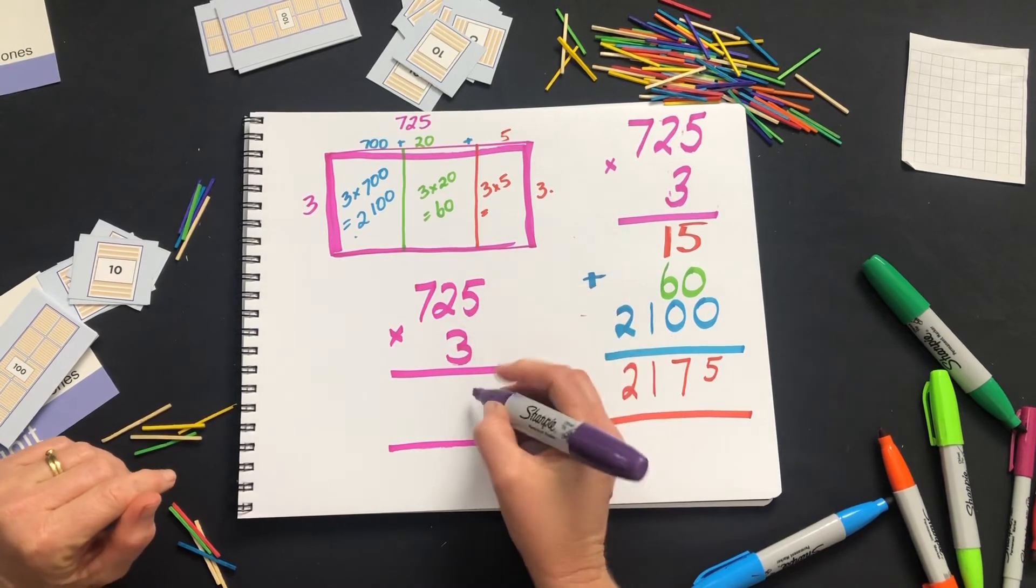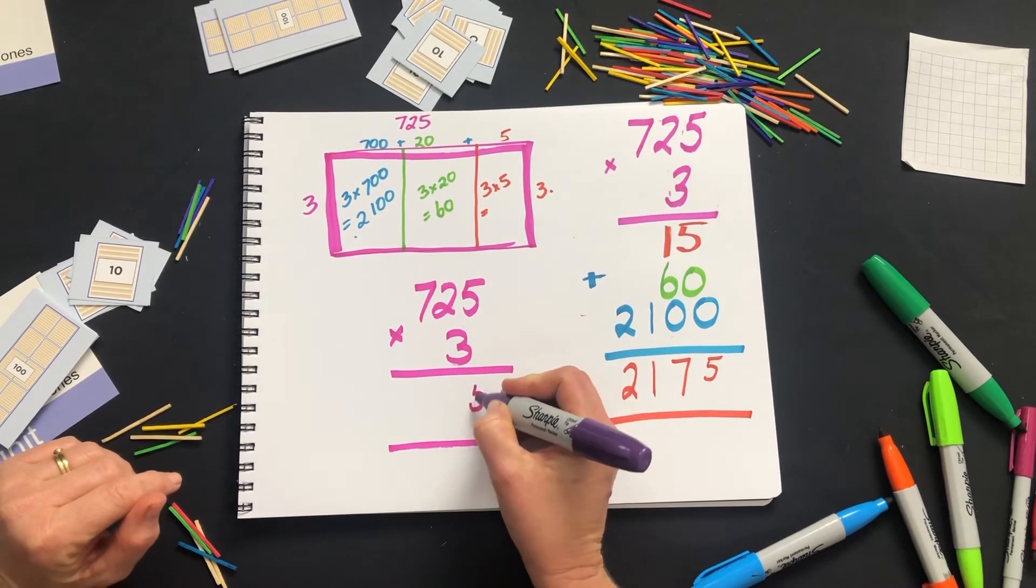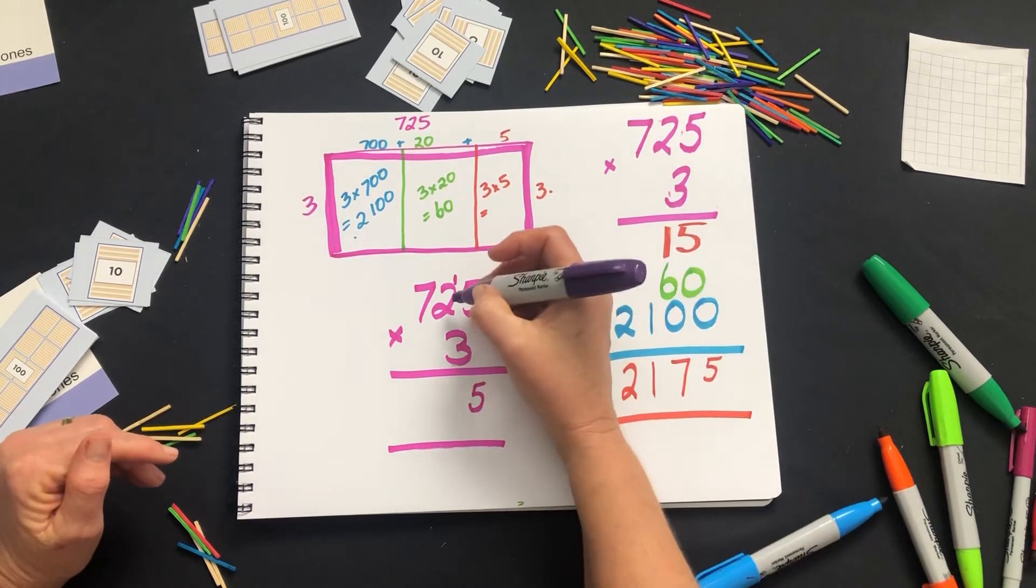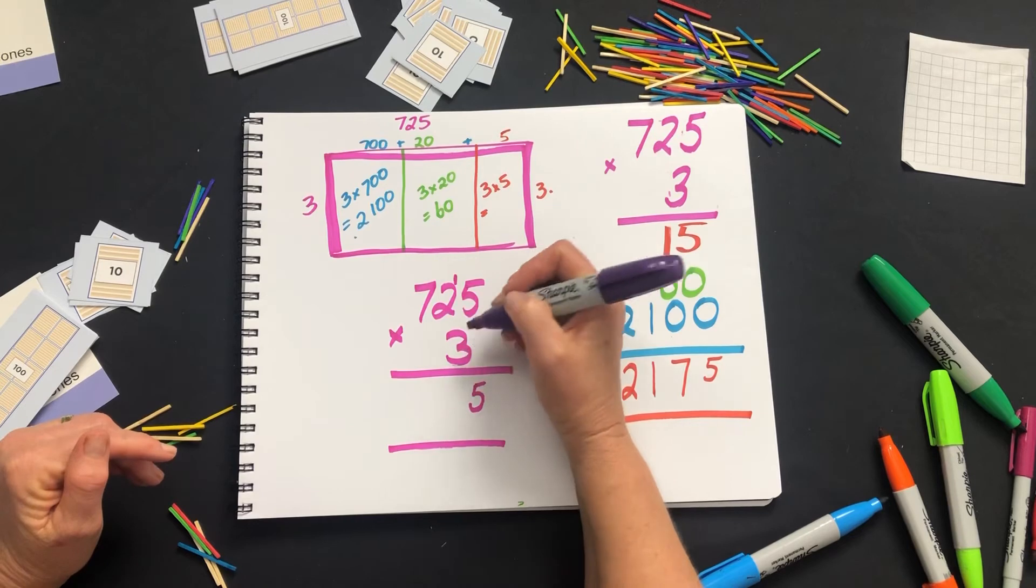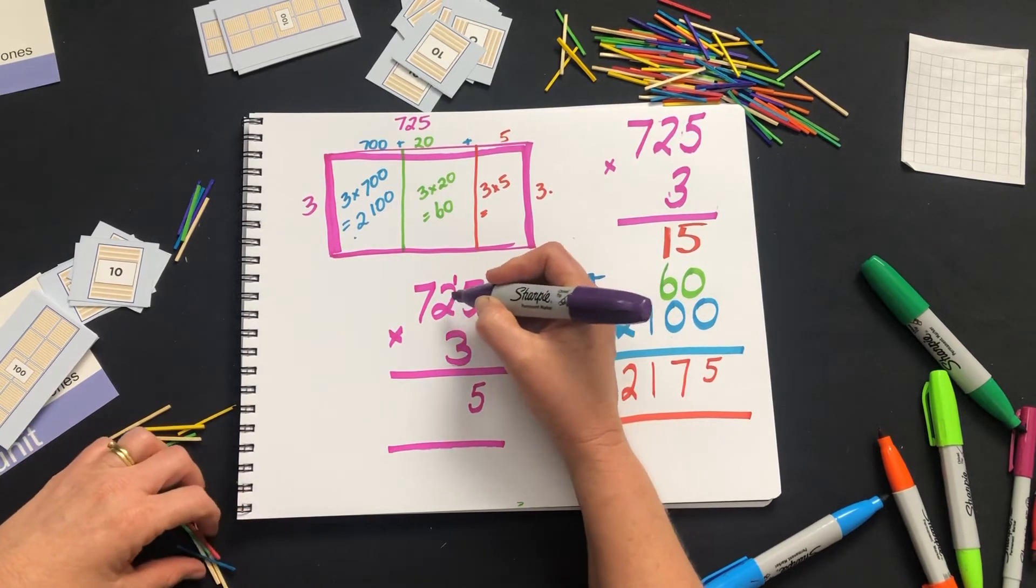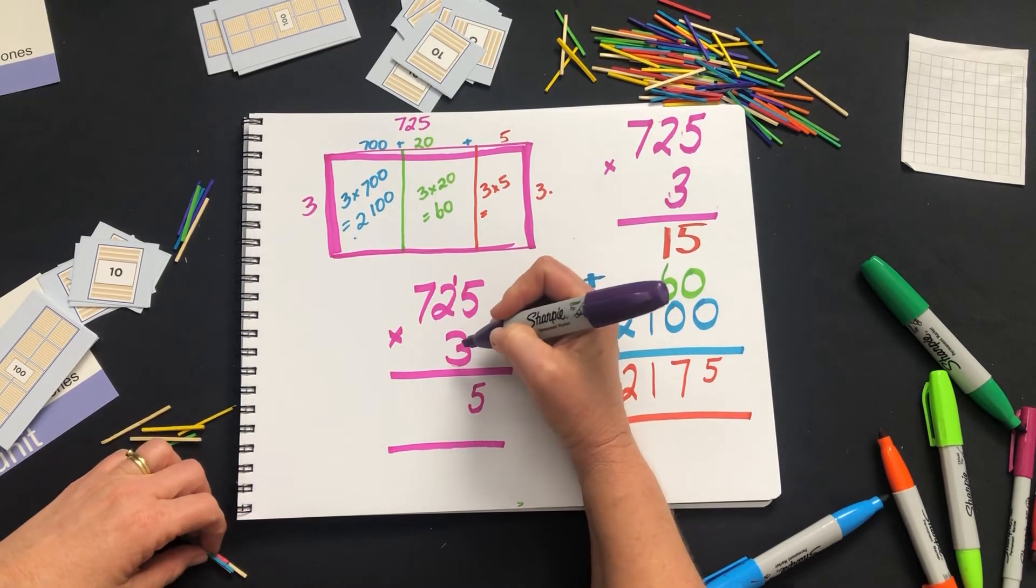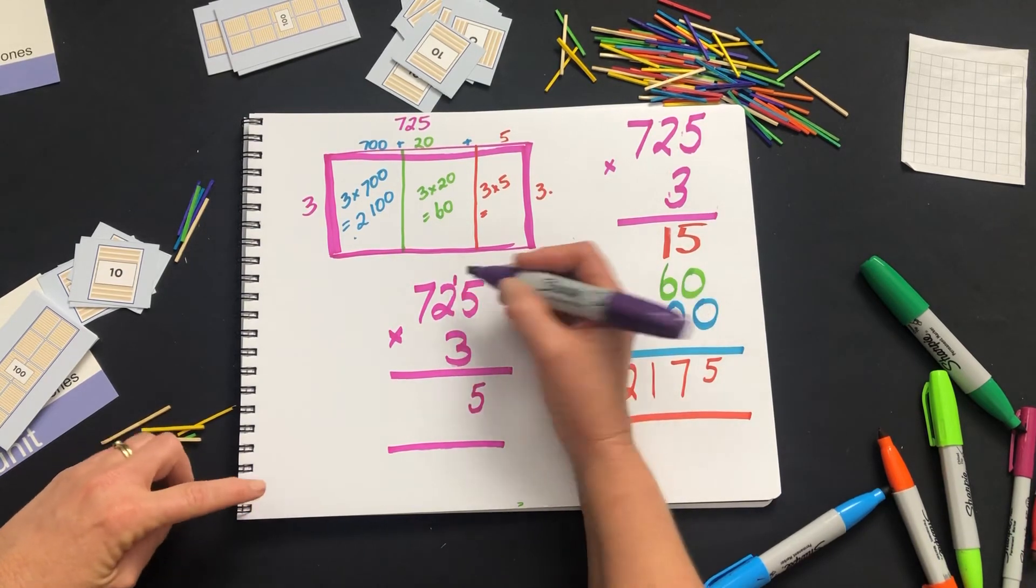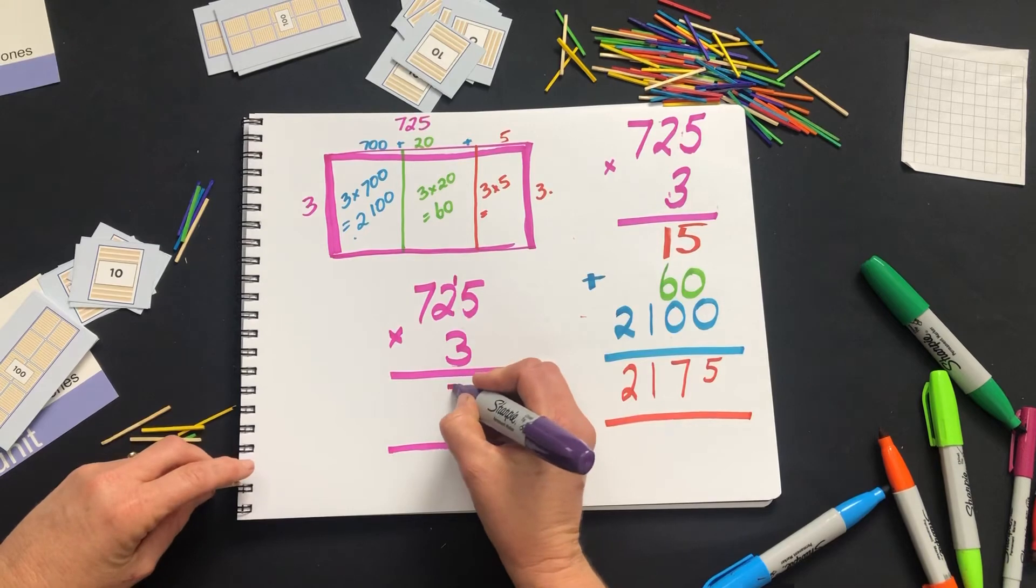So often we'll say 3 times 5 is 15. Put down the 5 and carry the 1. In fact, we're carrying 1 ten. 3 times 2—it's not 3 times 2, it's 3 times 2 tens or 20. So 3 times 2 tens gives us 6 tens plus 1 is 7 tens or 70.